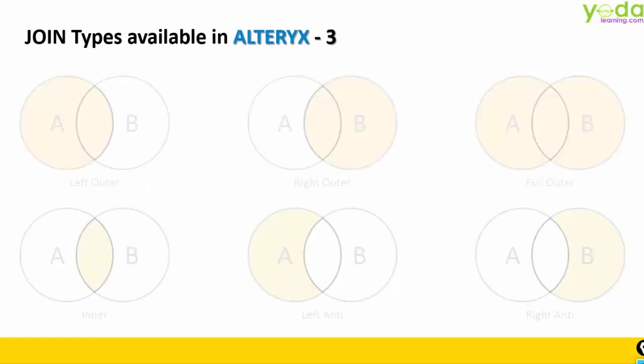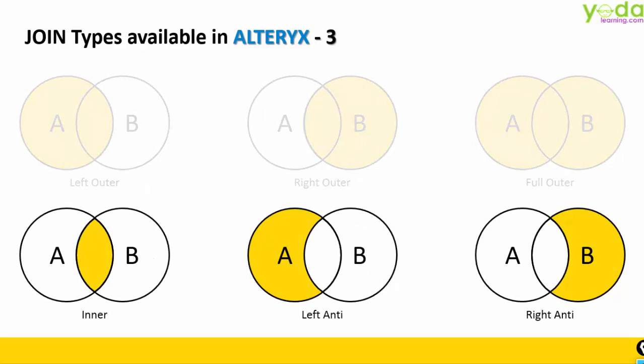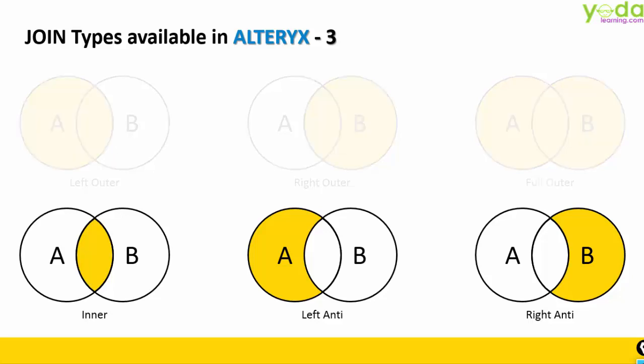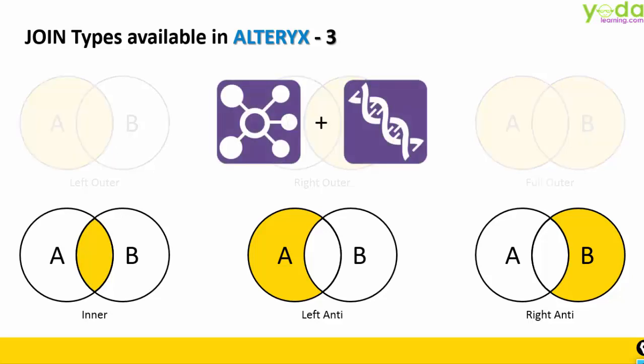If you are using Alteryx, there are only three available to you: Inner, Left Anti, and Right Anti. The remaining three you will have to synthetically prepare using two tools in Alteryx — those are Join and Union.